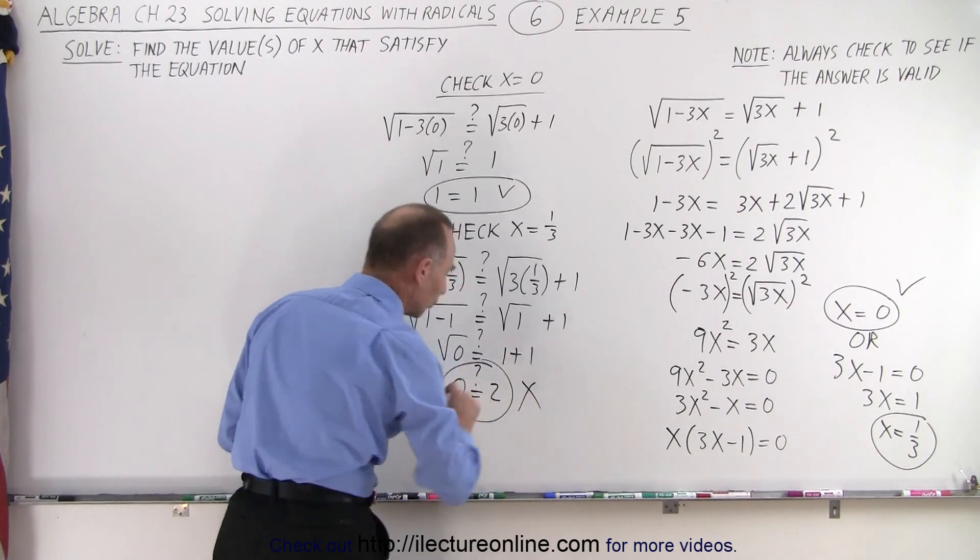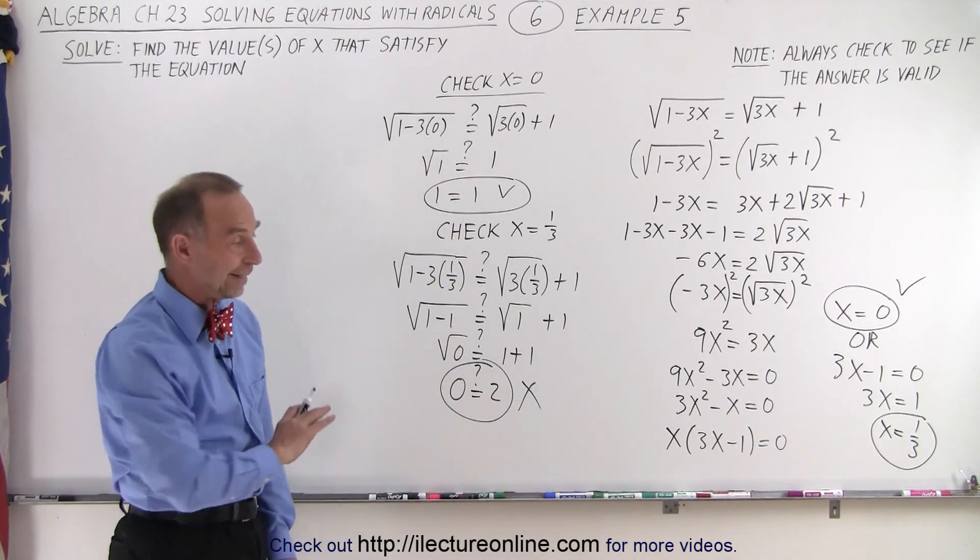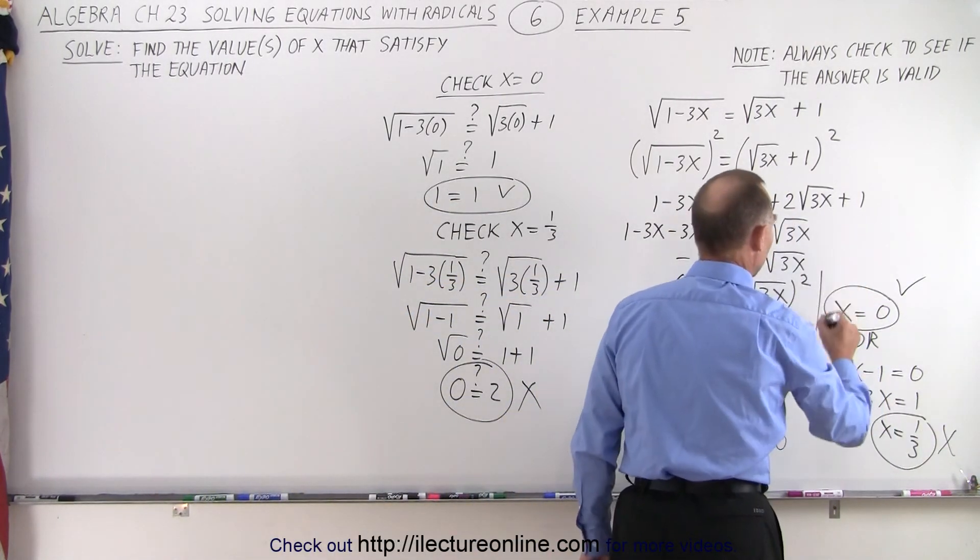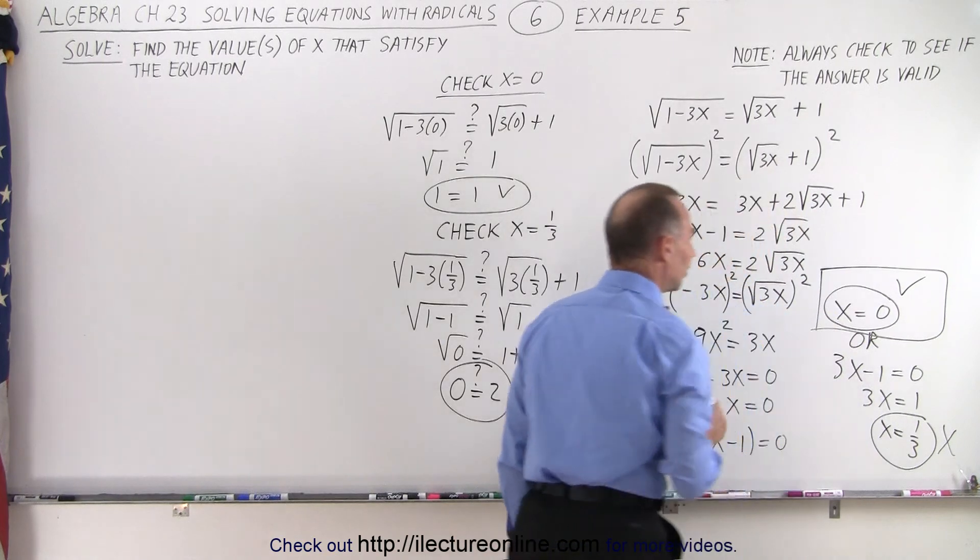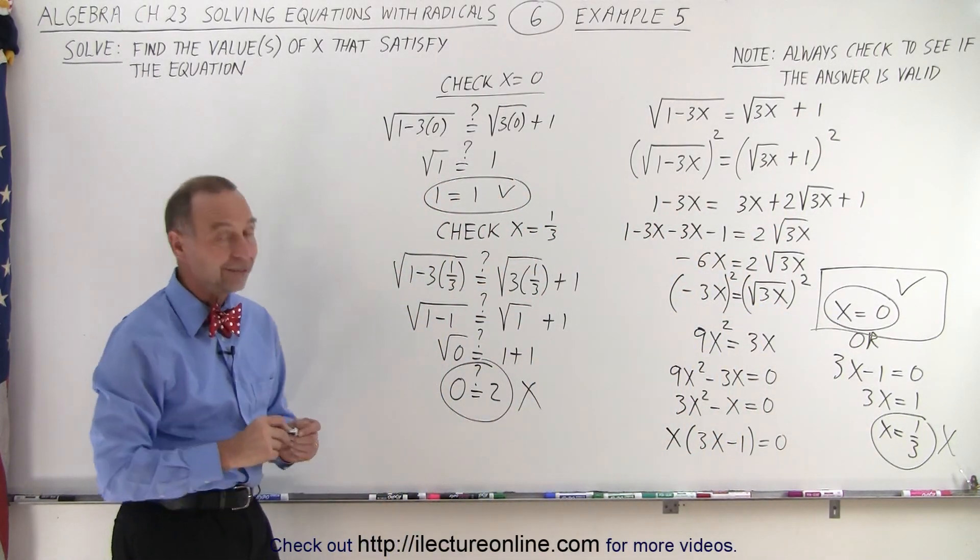And of course, that's not true. 0 can never equal 2, which means that x equals 1 third is not a valid solution to our original problem. So there's only one, x equals 0, that will satisfy that equation. And that is how it's done.